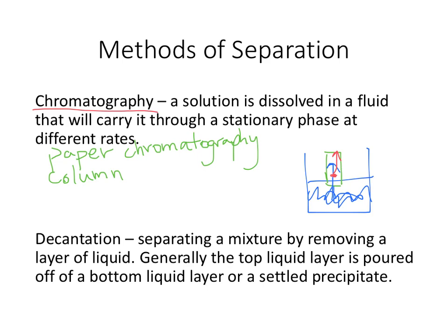And then the last one we have is decantation. Separating a mixture by removing a layer of liquid. Generally the top layer of liquid is poured off a bottom liquid layer, or a settled precipitate. So if you have again, that beaker that had the oil at the bottom, and it had the water at the top, you could simply just pour the water off the top, and it's called decanting the water off the top of the oil.